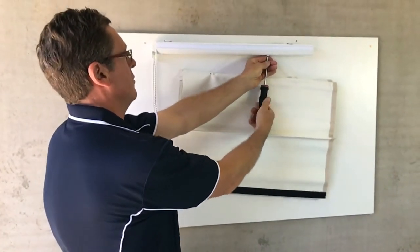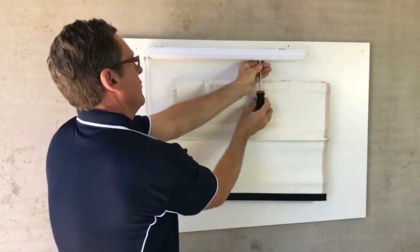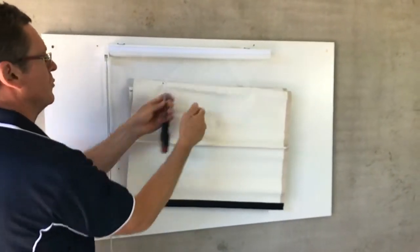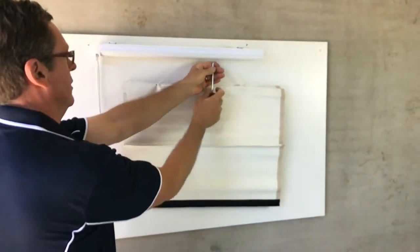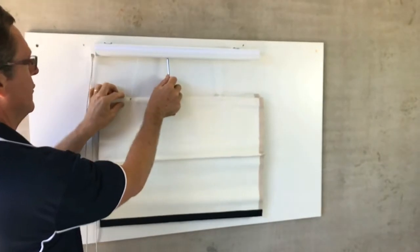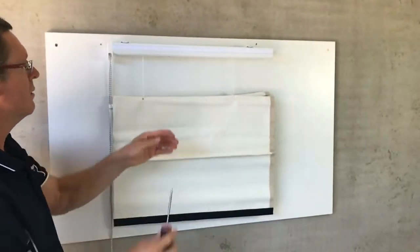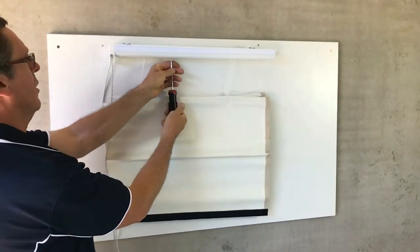So all we need to do is loosen off the screw that holds it in place, pull the spool back across until the cords sit square, tighten the screw.